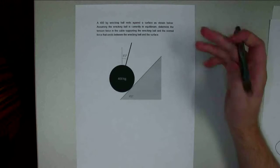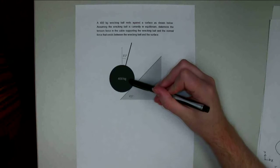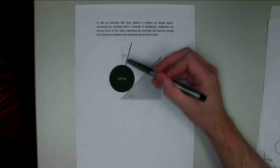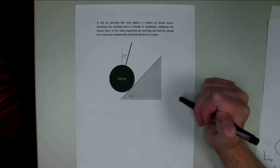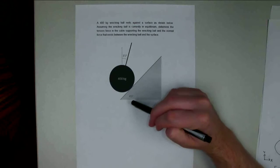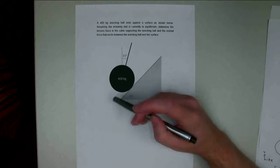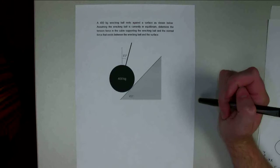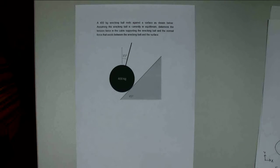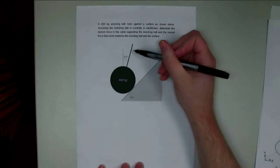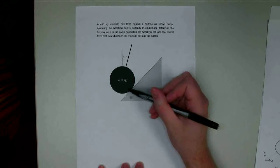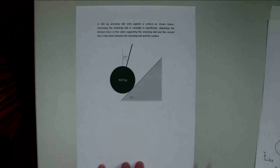Hello. For this problem, we have a 400-kilogram wrecking ball supported by a cable 15 degrees from vertical, and it's resting against a surface that is at a 45-degree angle. What we're asked to find in this problem is the tension in the cable and the normal force that exists between the wrecking ball and the surface.